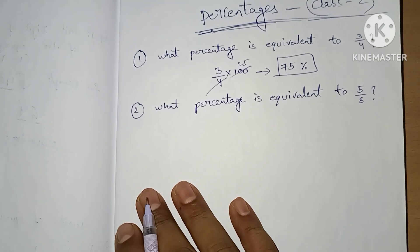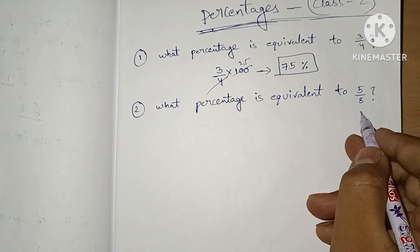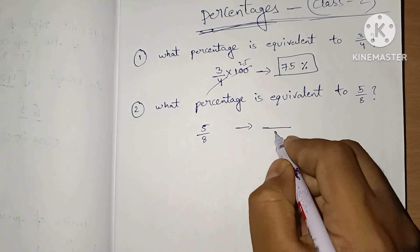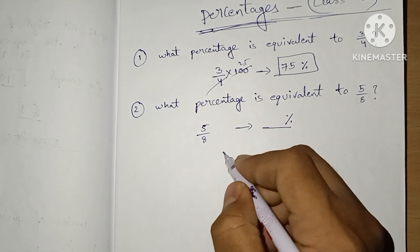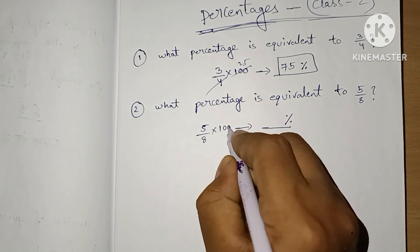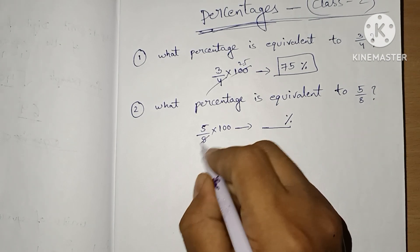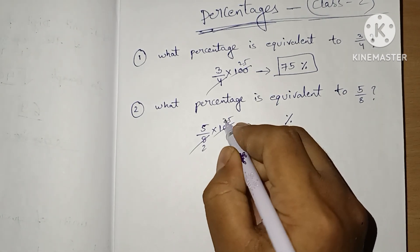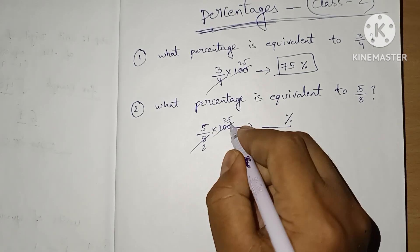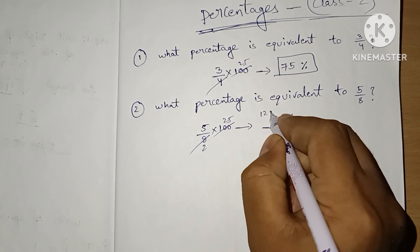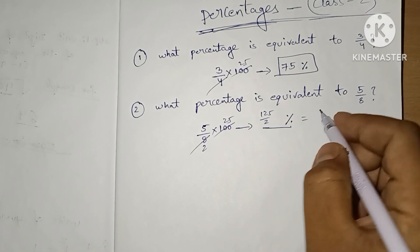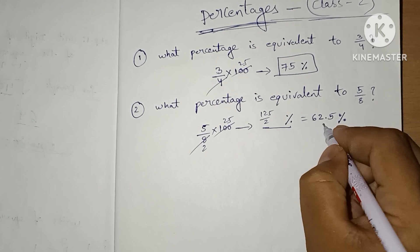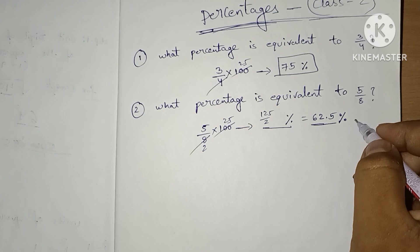Let's do one more. What percentage is equivalent to 5/8? For percentage, we multiply with 100. 8 goes into 100: 4 times 25. So we get 125/2. 125 divided by 2 is nothing but 62.5%. So 62.5% is the value of the fraction 5/8.